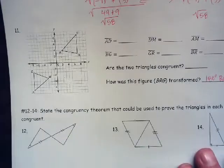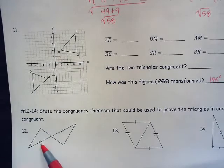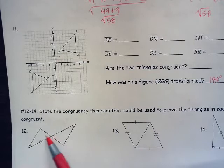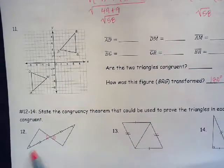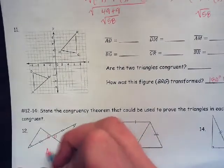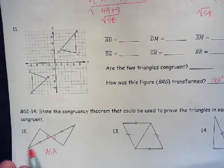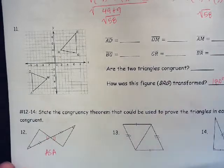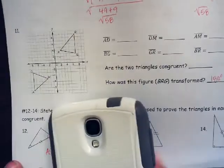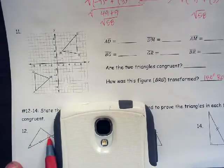Number 12: state the congruency theorem that could be used to prove the triangles in each figure are congruent. We have an angle and a side, but that's not enough. However, we have a vertical angle here that we can mark as congruent. That gives us angle-side-angle. When you check ASA, you start in one triangle and see what you have — you can't use two triangles to build your three elements.